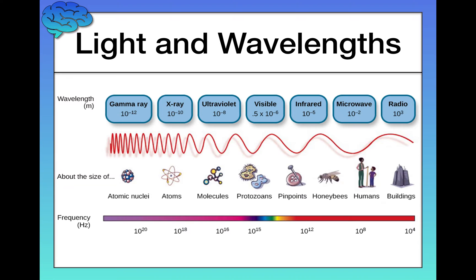Now go to the other end of the spectrum — radio waves have 10 to the third power meters as their wavelength. So huge, very long distances between the different peaks of those waves. Notice that visible light, what we can see as humans, is only a tiny little portion of that spectrum.